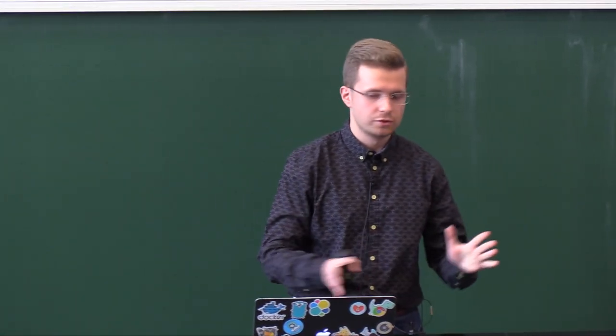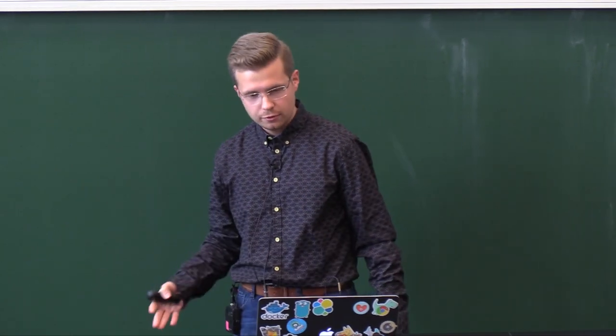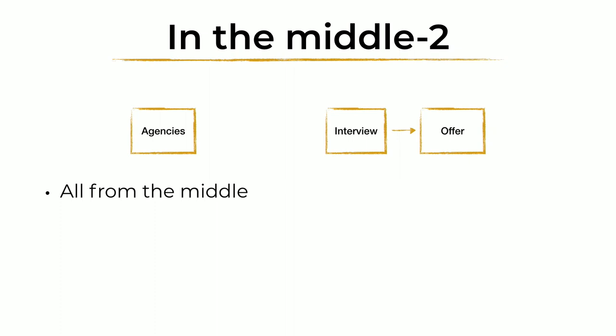Approaching middle phase two: we still had agencies, interviews, and an offer phase, but we added an internal CV screening step on our side. That really helped reduce the number of candidates who weren't a fit. I want to highlight that the agency and internal CV screening process should work like machine learning training — you do internal screening, send feedback back to agencies that a particular candidate doesn't fit, and they align with you. Think of it like back-propagation: you feed something in, respond 'no, this doesn't fit,' and gradually the agencies start to work better for you.